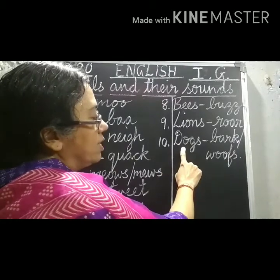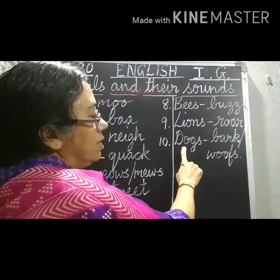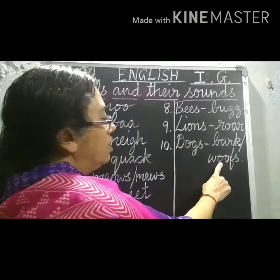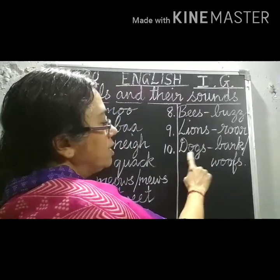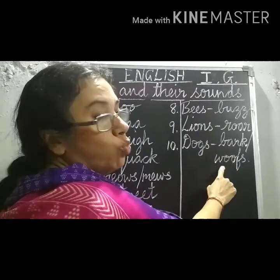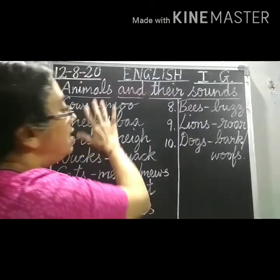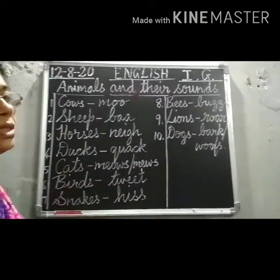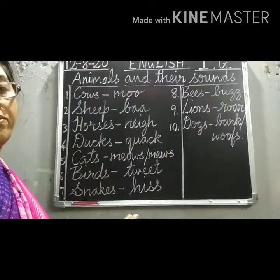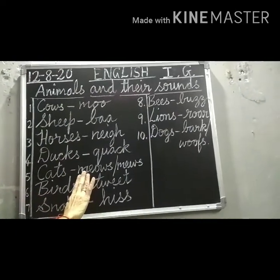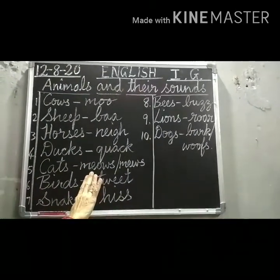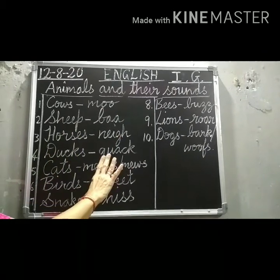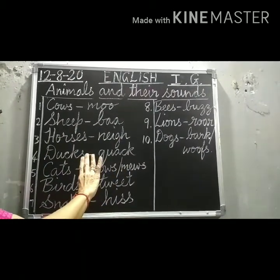Number ten: Dogs. Dogs — bark or woof. So these are the sounds of the different animals. You have to learn these sounds nicely, children. And now, we all want to hear these sounds. Okay children, let us hear the sounds.